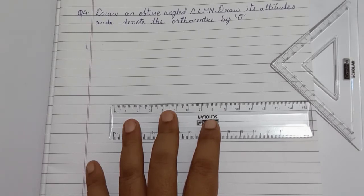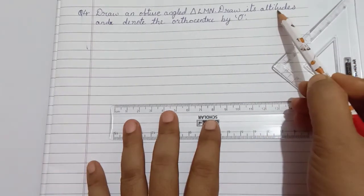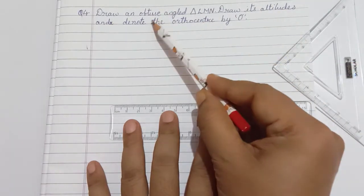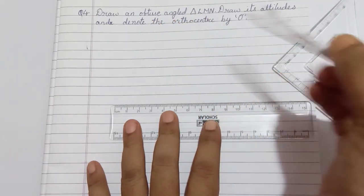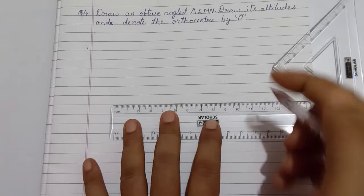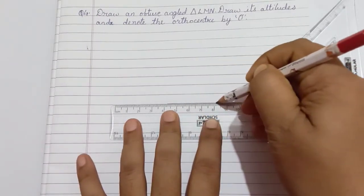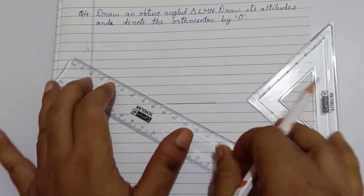Now, let's learn to find orthocenter O of the three altitudes in an obtuse angle triangle. For that, we need to draw an obtuse angle triangle of any measurement.